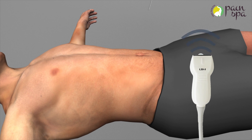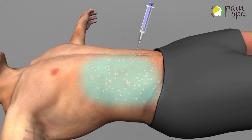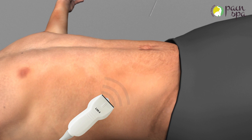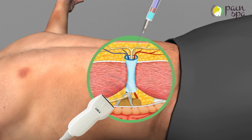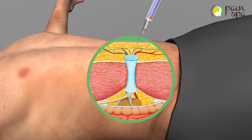Dr. Krishna will initially numb the skin with a numbing medicine. He will then use an ultrasound machine to guide the needle close to the abdominal nerve. Dr. Krishna will eventually inject a mixture of local anaesthetic and steroid to block the pain signals from the trapped nerve.